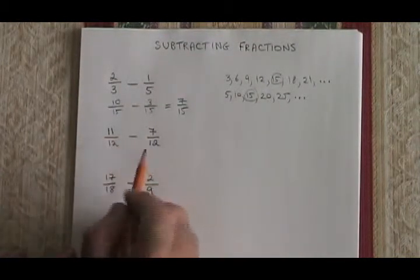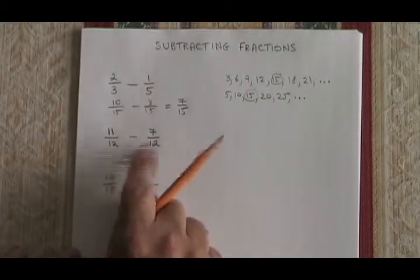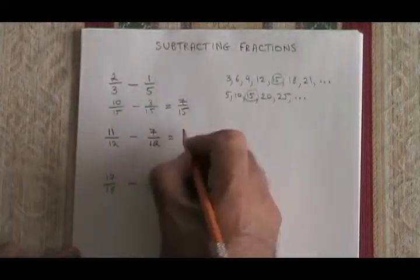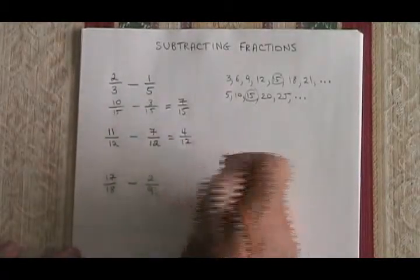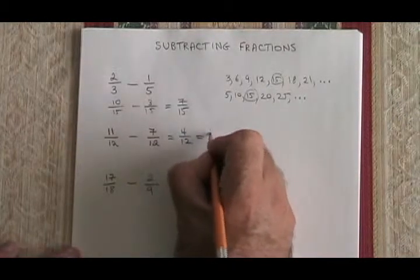Here we have 11-12 minus 7-12. Well, our denominator happens to already be common, so we have a really easy one here. We can just answer the question. 11 minus 7 is 4. Our answer is 4-12, which reduces, if I divide top and bottom by 4, into 1 third.